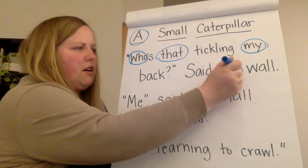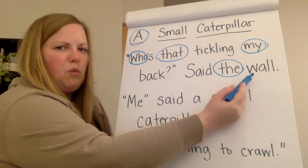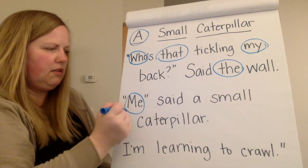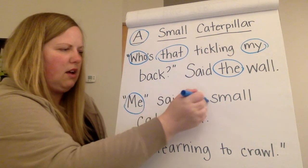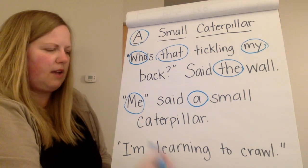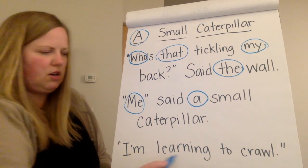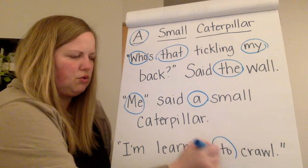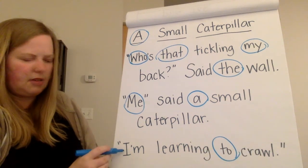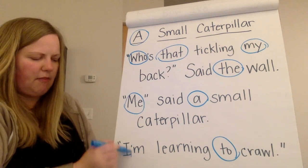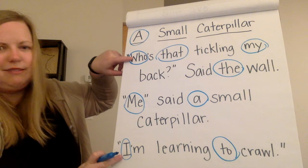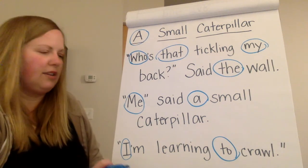Said the wall. Me — that is a sight word. Said a small caterpillar. I'm learning to crawl. Right here is the sight word 'I' but it's part of the word I'm, so it's not technically a sight word. Both of these are not technically the sight word, but it's part of the word in there.